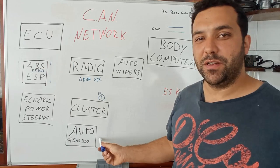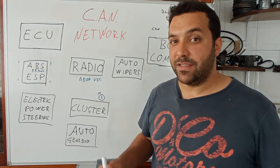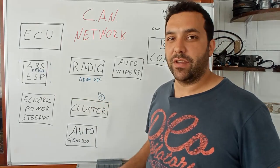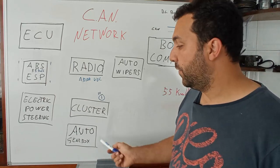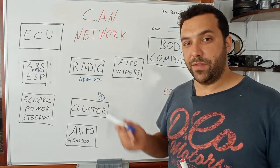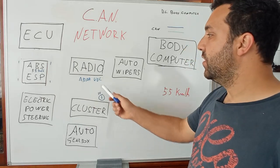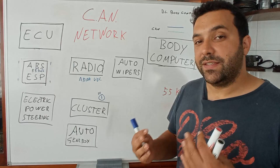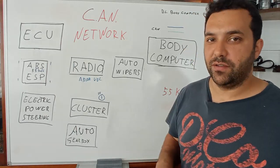On auto gearboxes — whether a pure automatic or a DCT — you want to know the speed of the car to have perfect management of the gearing. On the auto windshield wipers you also want to know the speed because if you are going faster with the same amount of rain, you need faster wipers.